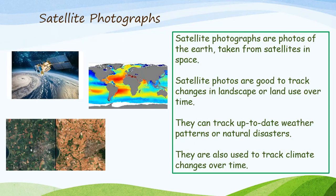Satellite photographs, as the name suggests, are photos of the earth taken from satellites in space. Satellite photos are good for tracking changes in landscape or land use over time. They can also track up-to-date weather patterns or natural disasters, and they are also used to track climate change over time.